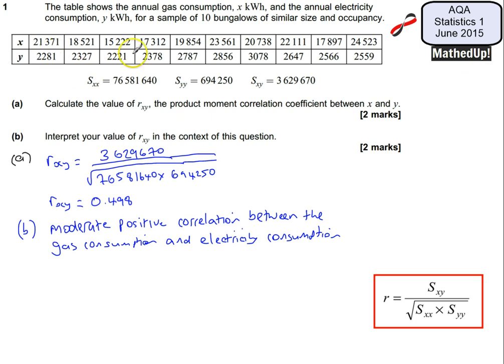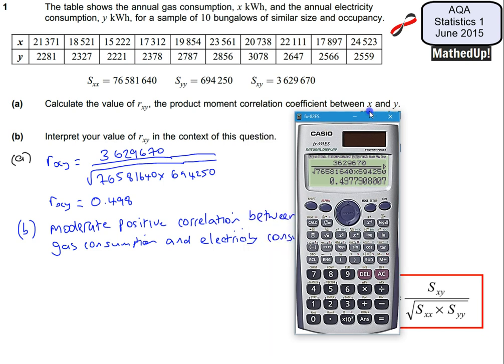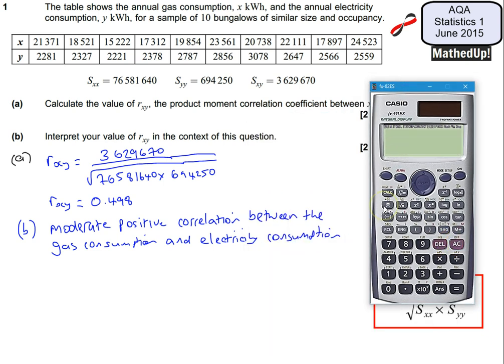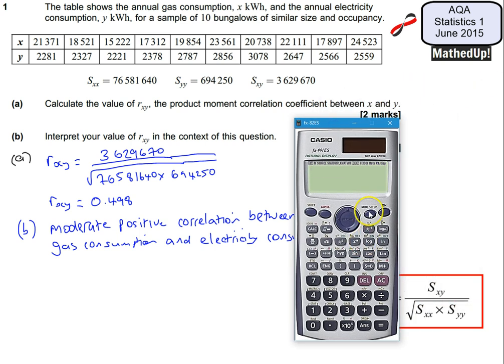So using our raw data, if I grab my calculator again and I'm going to clear my screen, I'm going to put myself into stats mode which is number two and we're going to be in this mode here which is my regression mode so option two. Your calculator might have a different option for that and I'm going to put in my values of x and y.